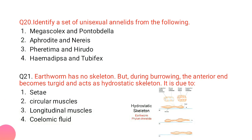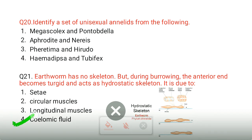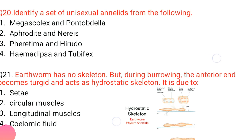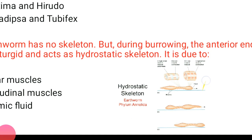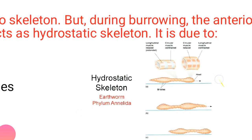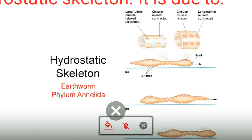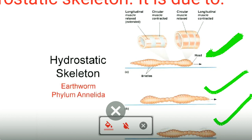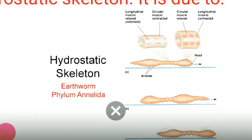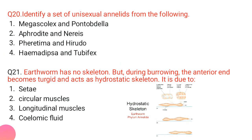The earthworm has no skeleton, but during burrowing the anterior end becomes turgid and acts as a hydrostatic skeleton due to coelomic fluid. Earthworms have circular muscles and longitudinal muscles. The coelomic fluid inside the body provides stiffness, and these muscles relax and contract alternately, enabling movement, burrowing, and most body functions. The answer is coelomic fluid — the hydrostatic skeleton is a very important function of these animals.